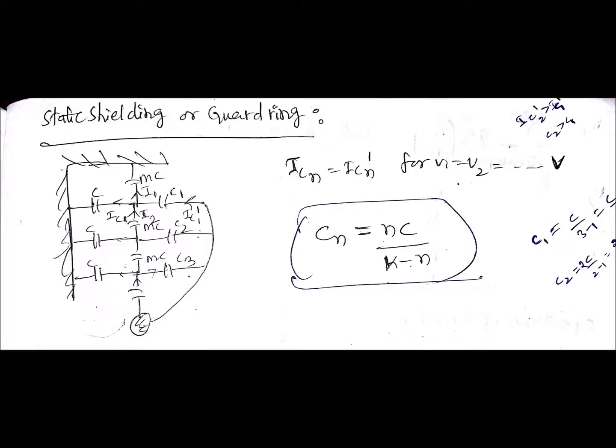For making that, how are you going to choose the value of the capacitance through the guard ring? The formula is Cn equals Nc divided by K minus N, where N is the particular capacitance which you are finding out. If N equals 1, that means it is far from the conductor. If it is 3, it is near to the conductor.